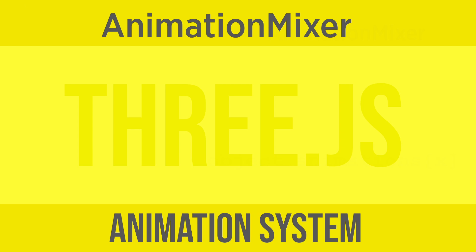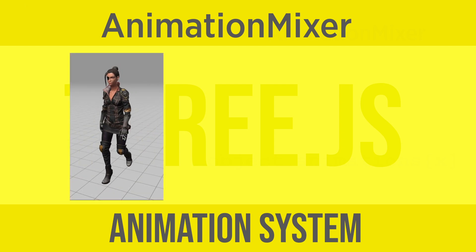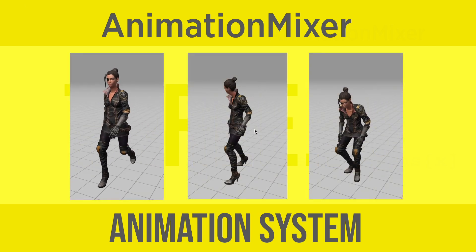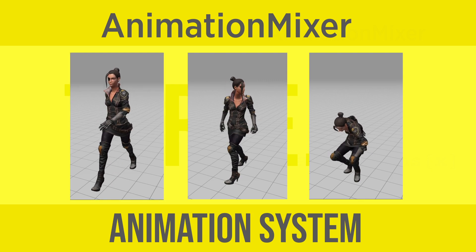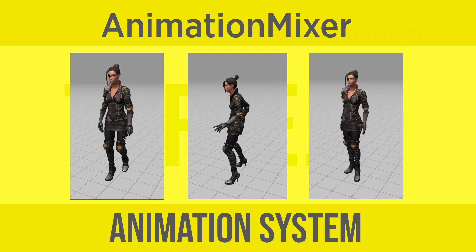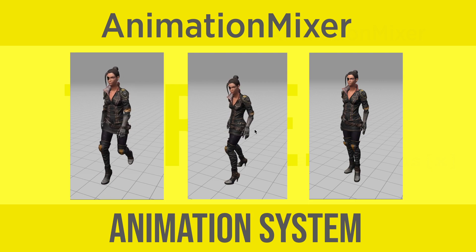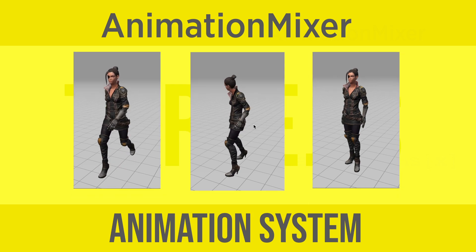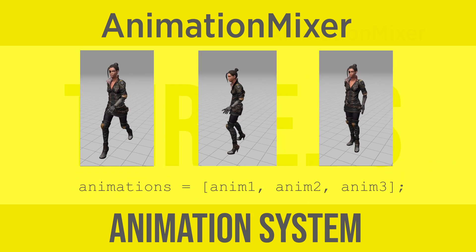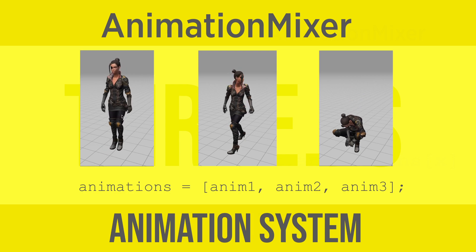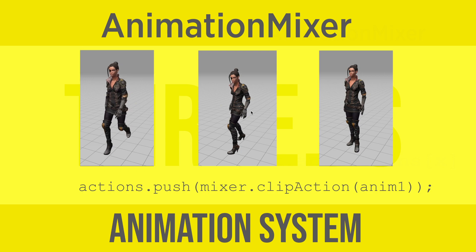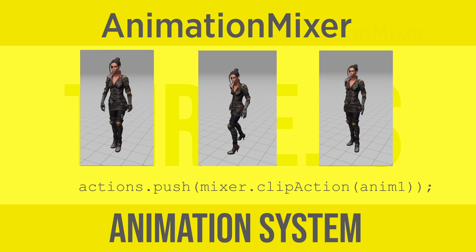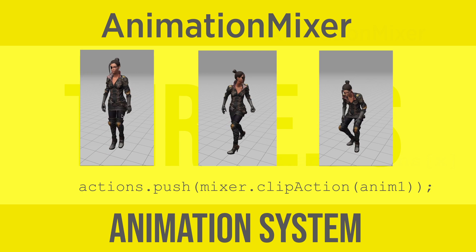To recap: you get your animation clips by loading in an FBX file or using a GLTF file. If these clips are in different files, it's useful to put them into an array to be more easily accessed. You can then choose to create animation actions from the clips, if they're always going to be handled by the same animation mixer. Then create an array of actions.